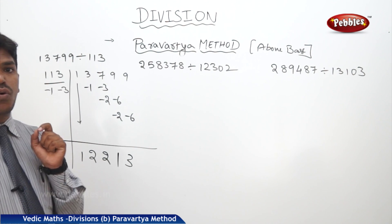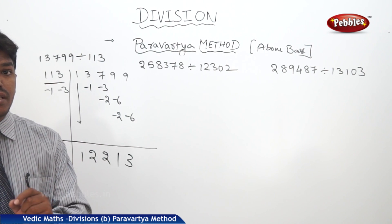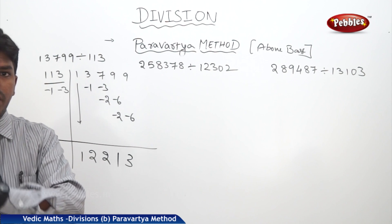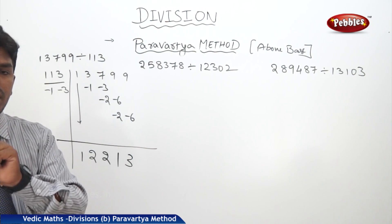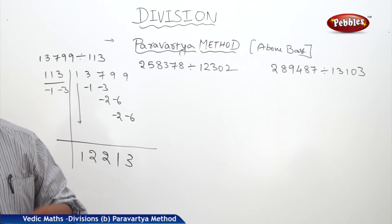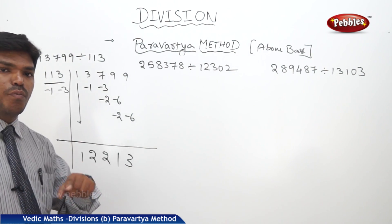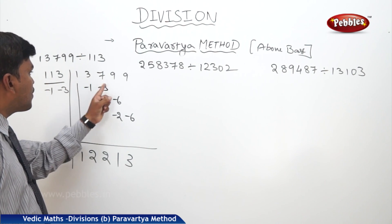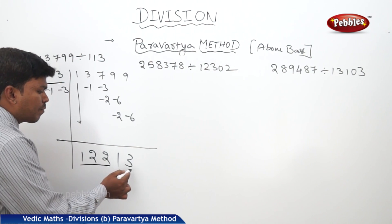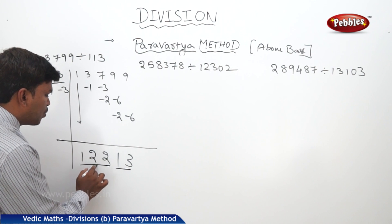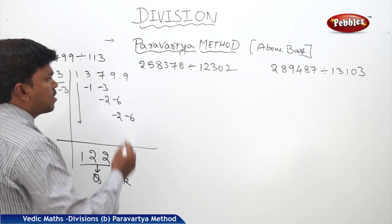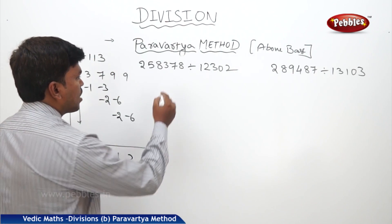Now what is our quotient figure? The number of digits in the quotient is given by the difference of the number of digits in the dividend and the divisor, plus 1. Dividend has 5 digits, divisor has 3 digits: 5 minus 3 equals 2, plus 1 equals 3. So the quotient has 3 digits from the left. Our quotient is 122 and our remainder is 30.